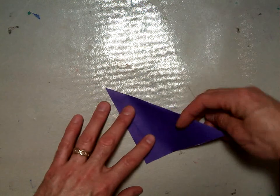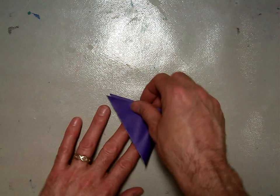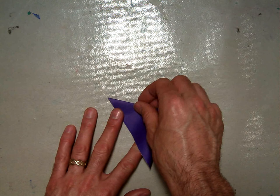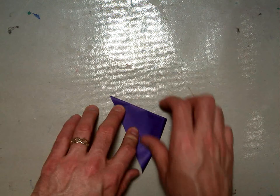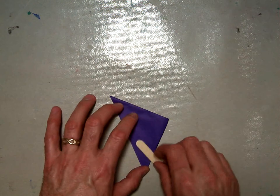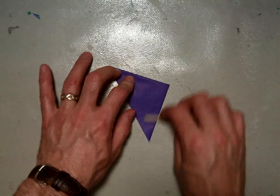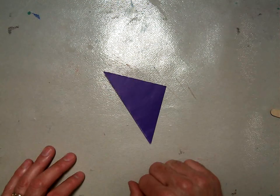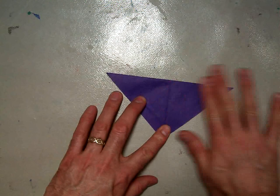We're going to fold it in half one more time to get a triangle that's just a bit smaller. Use your bone folder, and then open it back up, and you should have a crease down the middle.